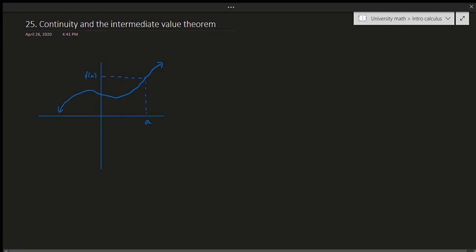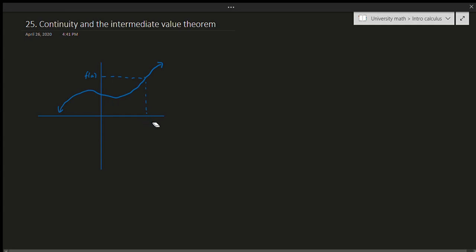There is a more formal definition: a function is said to be continuous at a point 'a' if the limit as x approaches 'a' of the function is equal to the value of that function at 'a'. Let's do a more concrete example to demonstrate what it means for a function to be continuous.